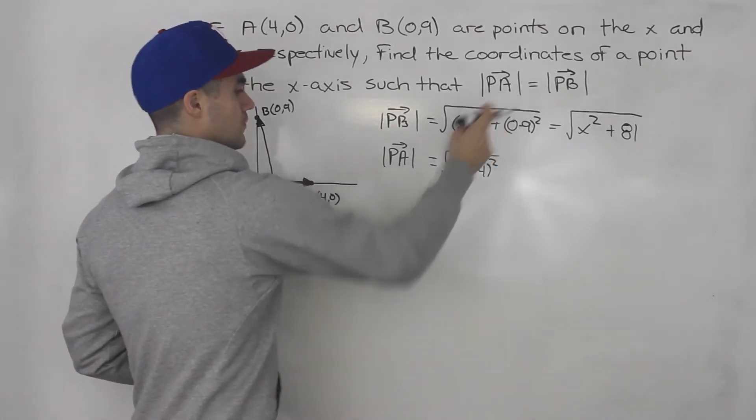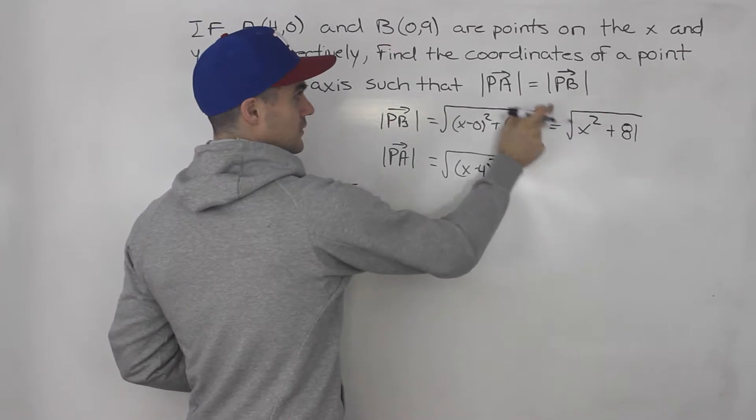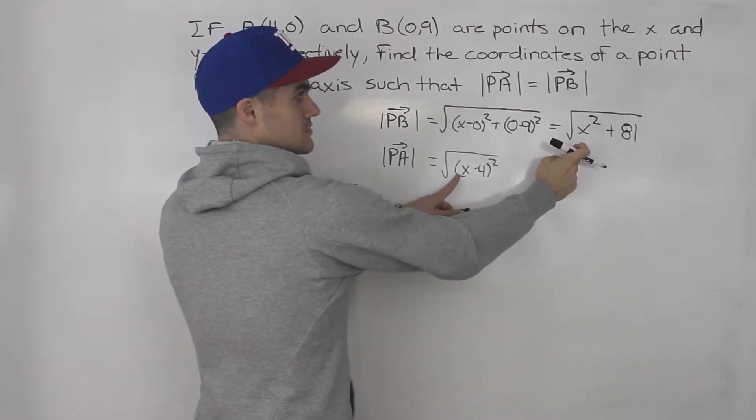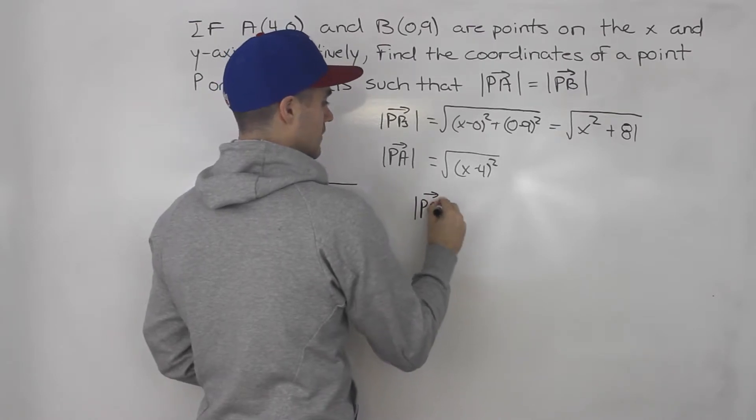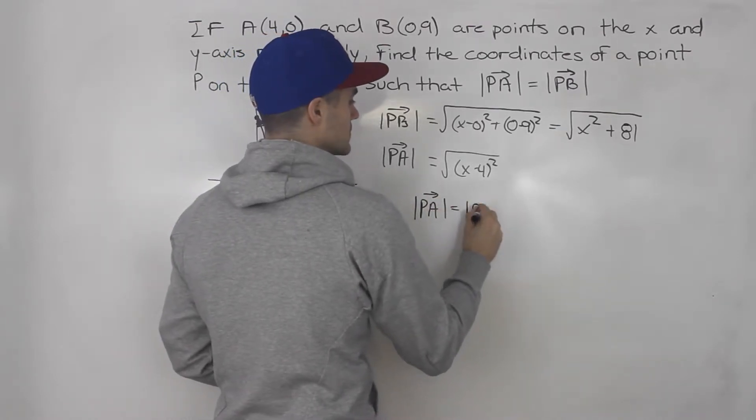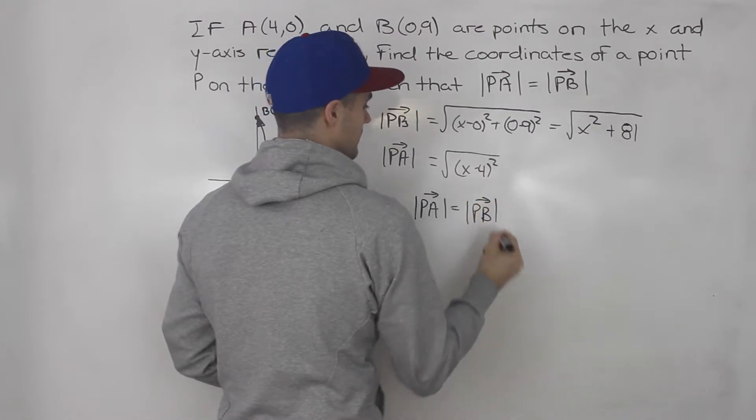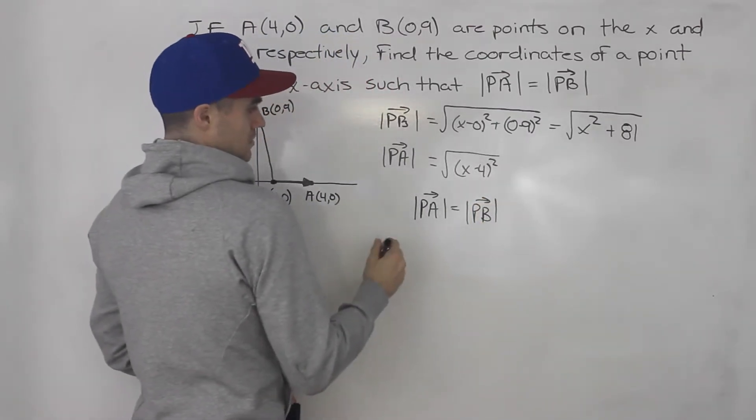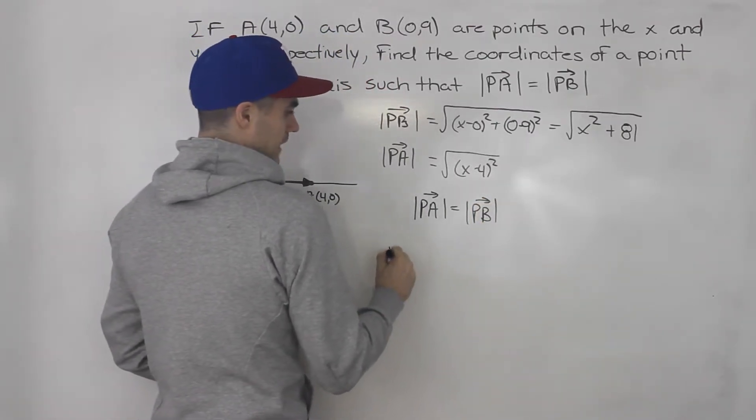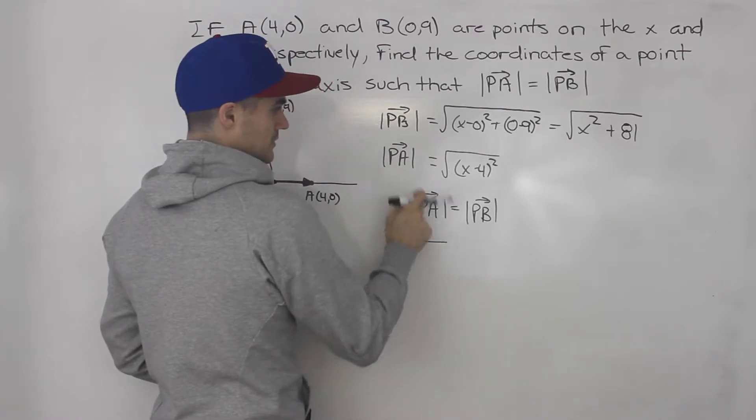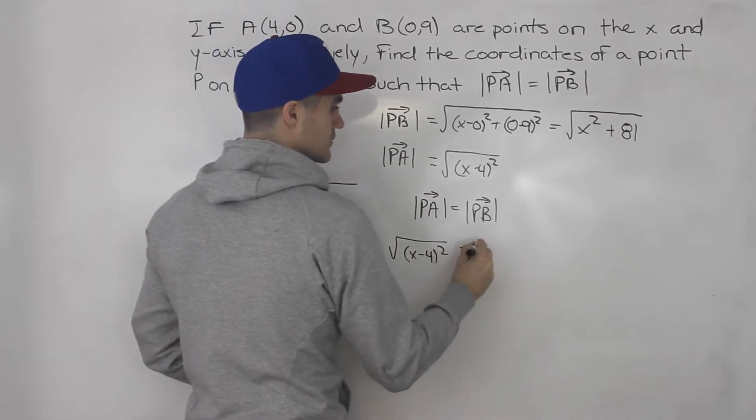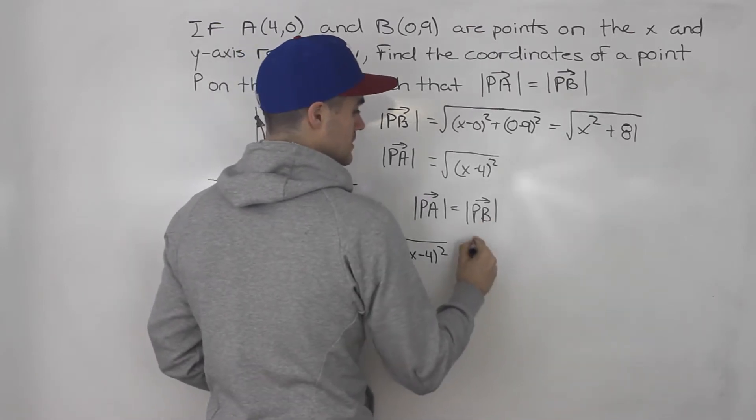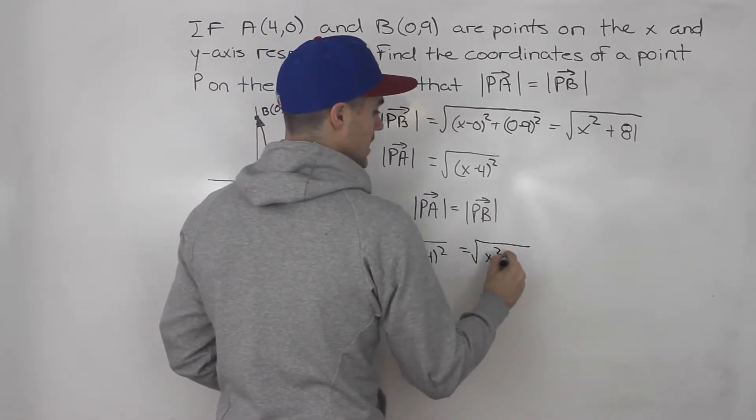We have to find that x value where these two magnitudes are going to equal, right? So we have magnitude of PA equals the magnitude of PB. If we write out these magnitudes, the magnitude of PA is √(x - 4)². Magnitude of PB is √(x² + 81).